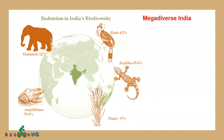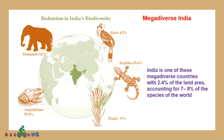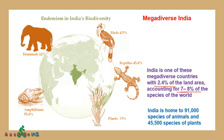India is also one of these mega diverse countries. With just 2.4% of the world's land area, India accounts for approximately 7-8% of the world's species. India is home to 91,000 species of animals and 45,500 species of plants, which is why it qualifies as a mega diverse country.